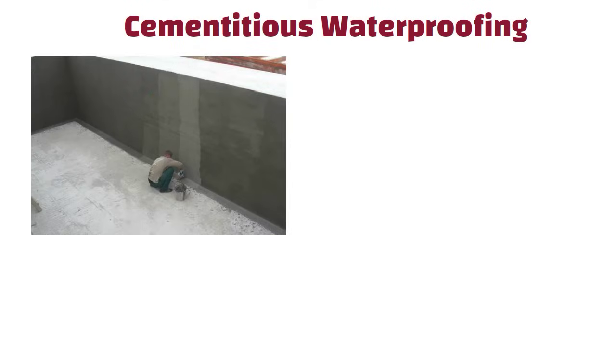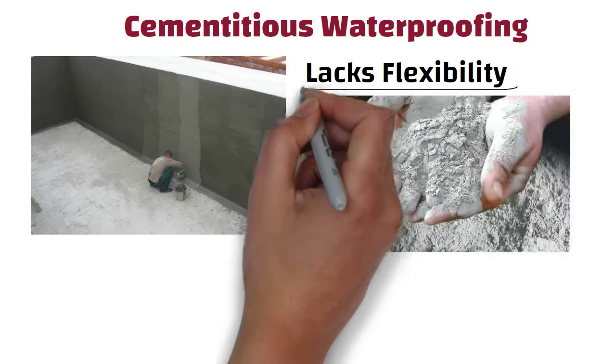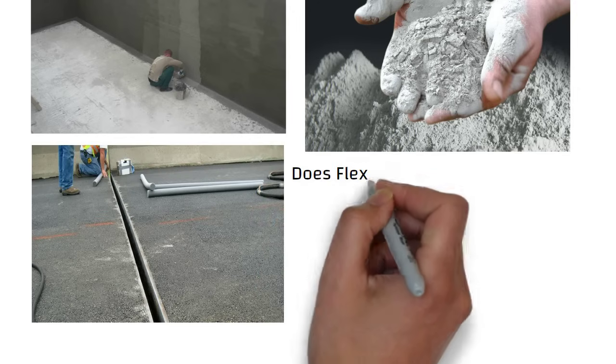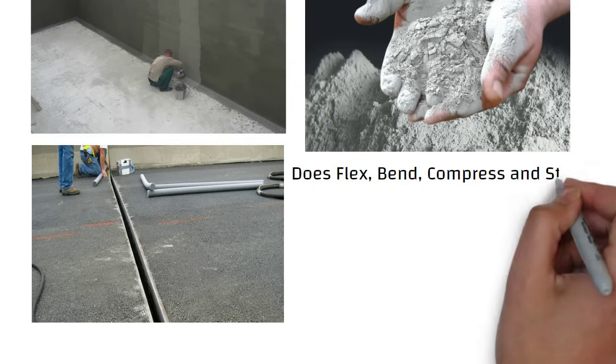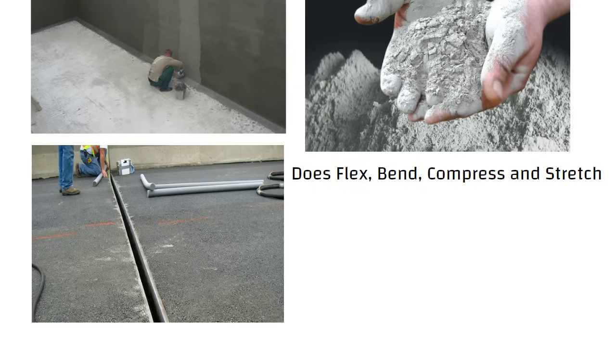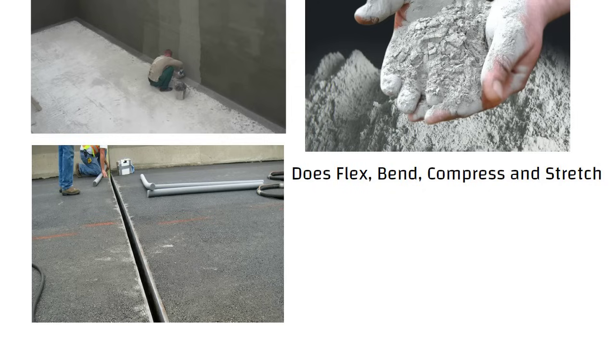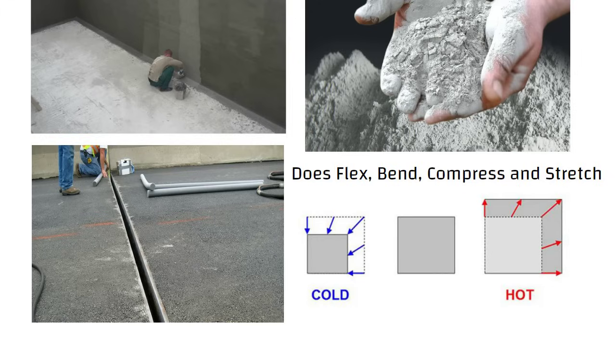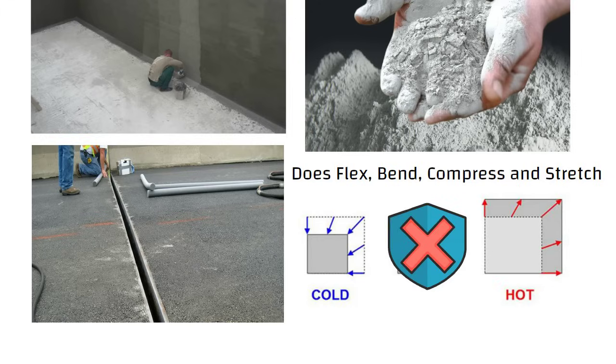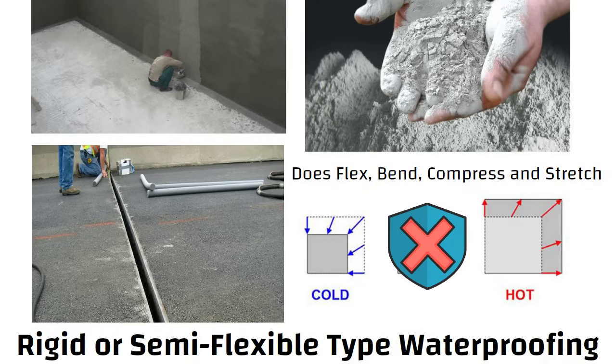Cementitious waterproofing is easy to apply but it lacks flexibility. This is because cement does not have a lot of flexibility to begin with. While concrete does flex, bend, compress and stretch, it is only minimal. Thus expansion and contraction process will not take place in cementitious waterproofing. That's why this type of waterproofing is called as rigid or semi-flexible type waterproofing.